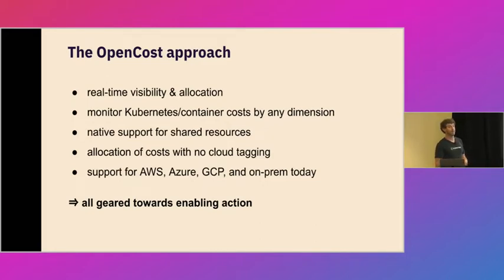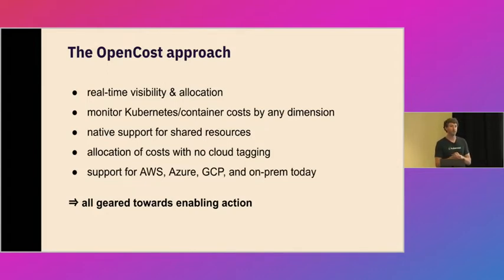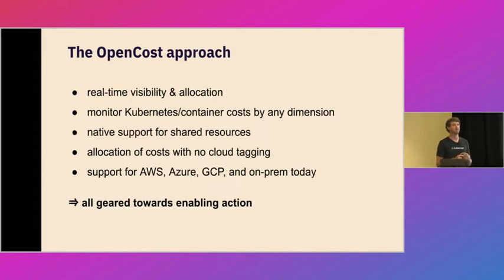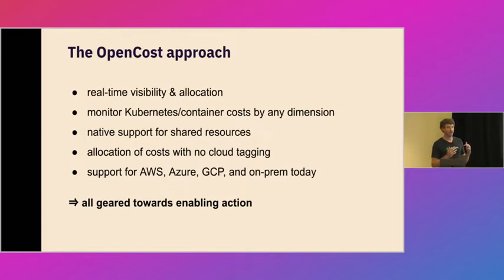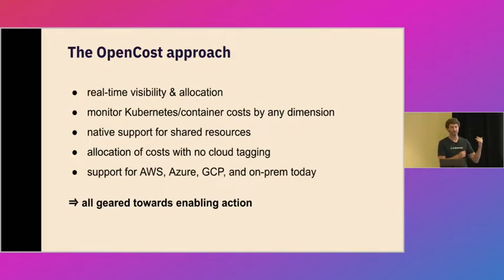The second core tenet was really having the ability to look at cost by truly any dimension. This is really important because organizations architect or organize their applications or microservices differently in Kubernetes. The ability to actually take action or have teams bought into cost figures is truly a function of the ability to understand how they're generated. When you say 'tell me the cost of a namespace,' it is really common for engineering teams to ask 'why does it cost that?' Having the ability to drill down into services, labels, or individual pods in that namespace is really powerful.